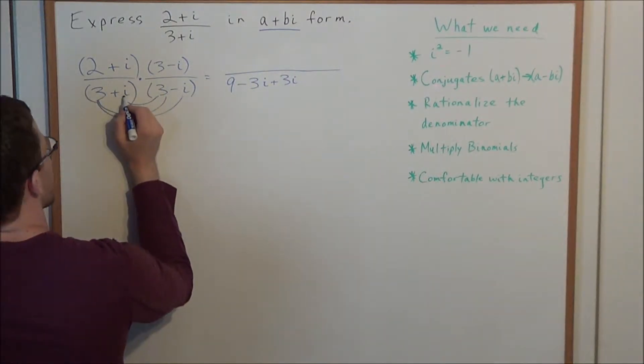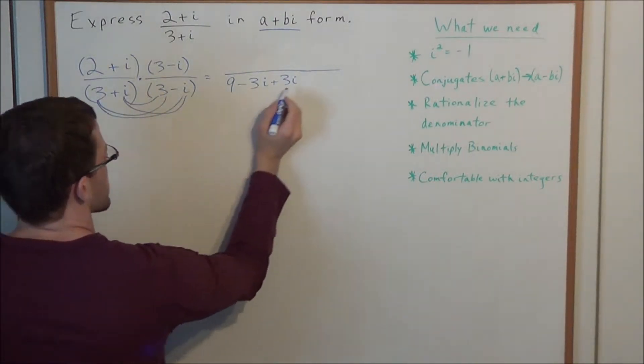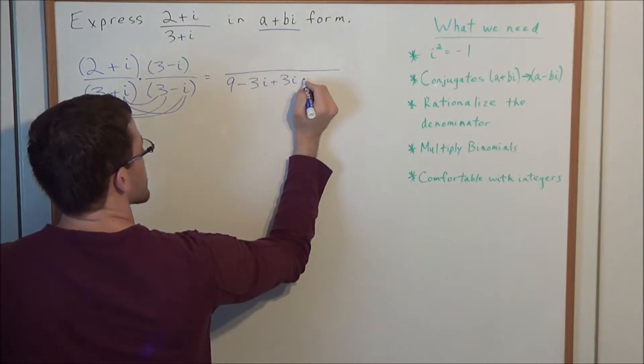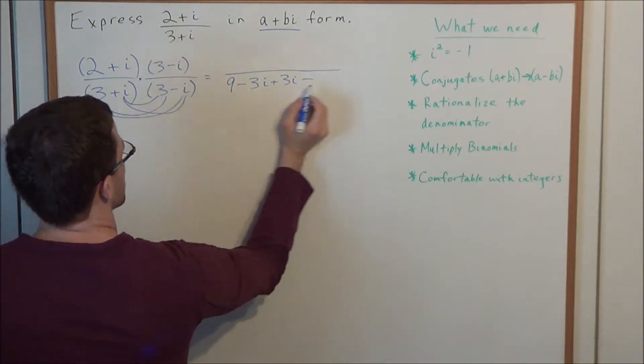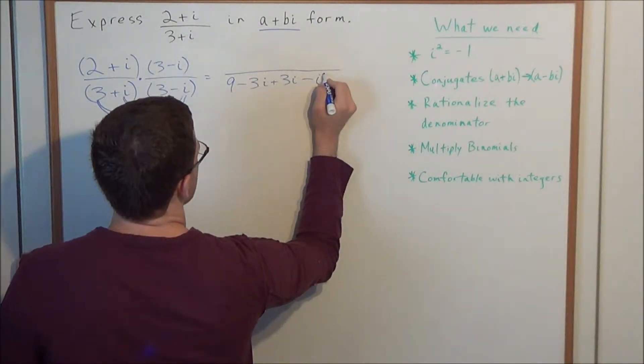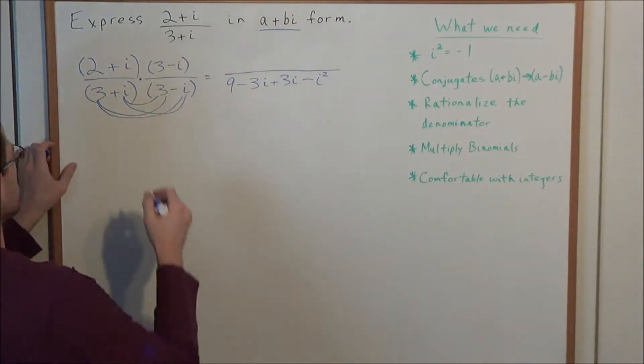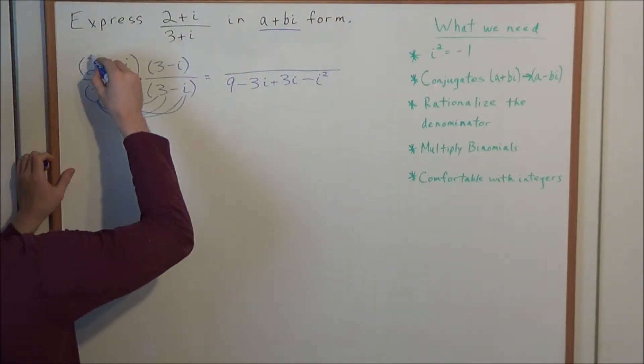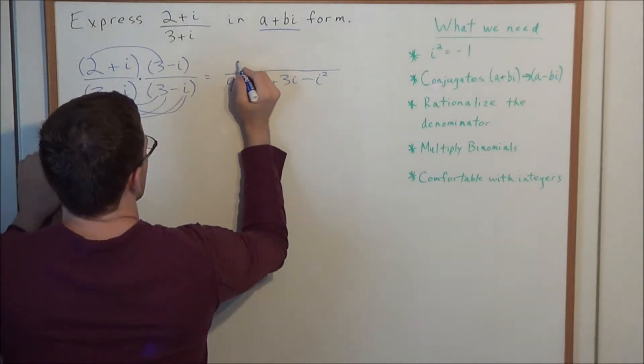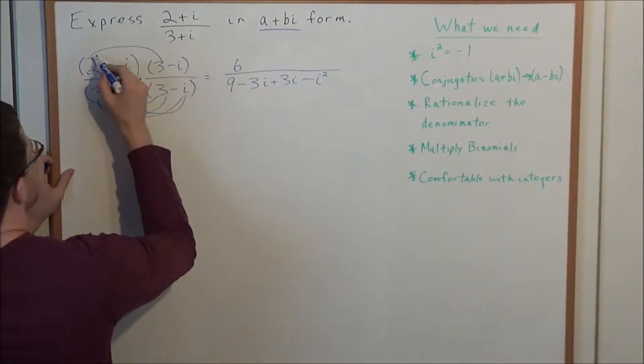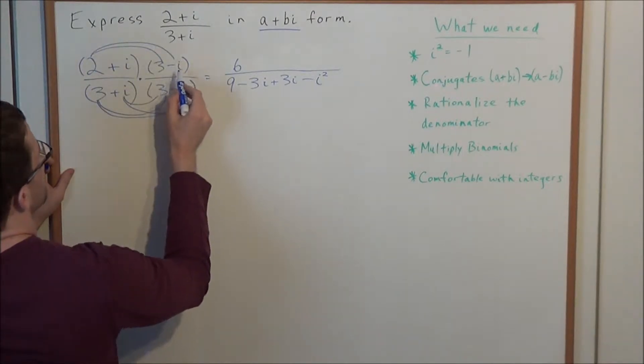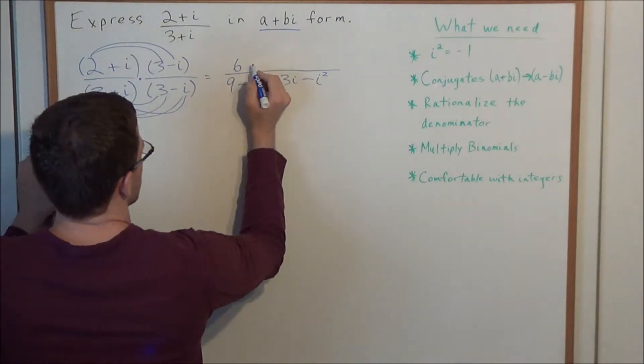And last, we have positive i times a negative i. Positive times a negative is a negative. And now we have i times i is i squared. And now we need to take care of the numerator. So we're multiplying a positive 2 times a positive 3. This is a positive 6. Now we have positive 2 times negative i. This is a minus 2i.